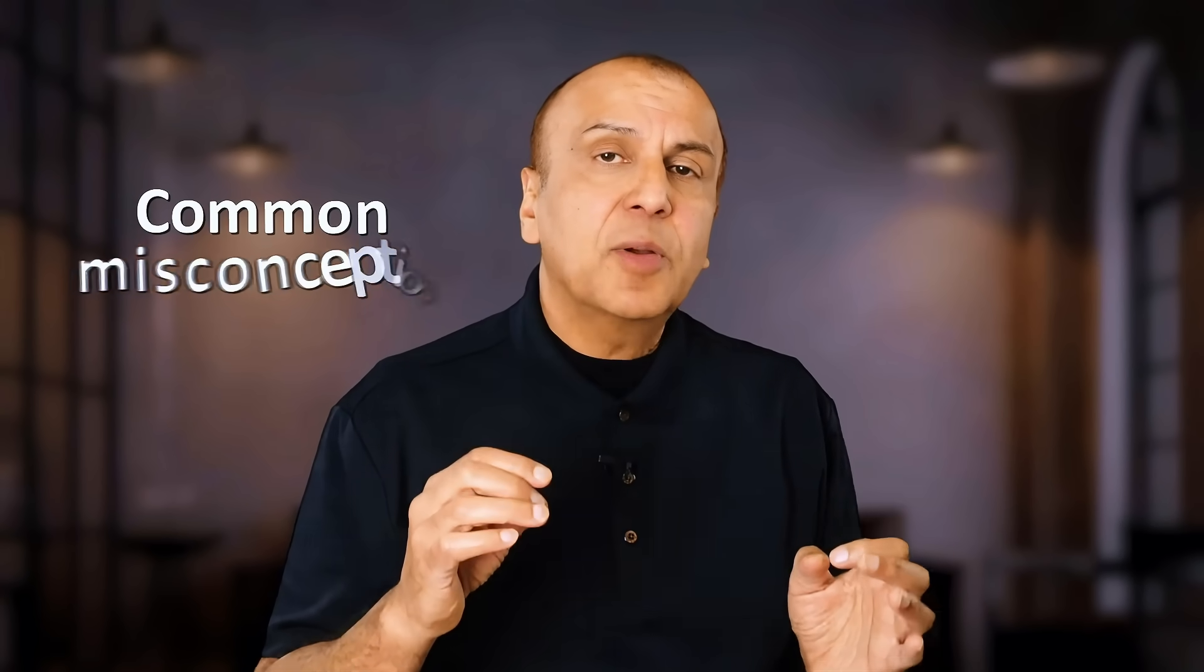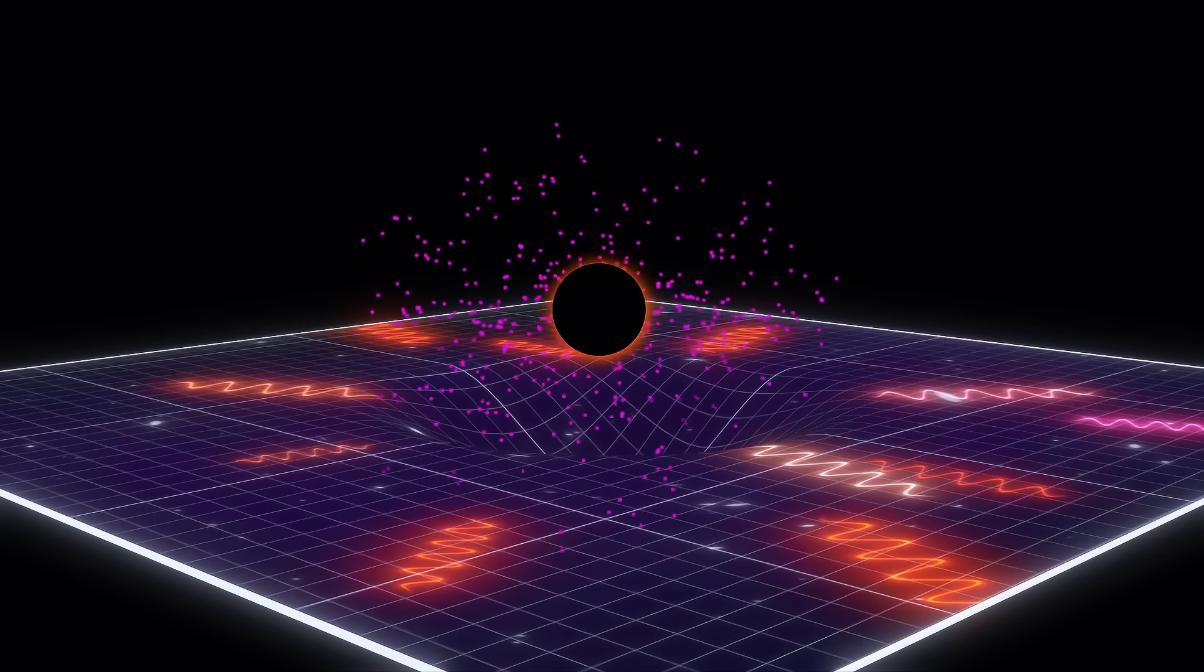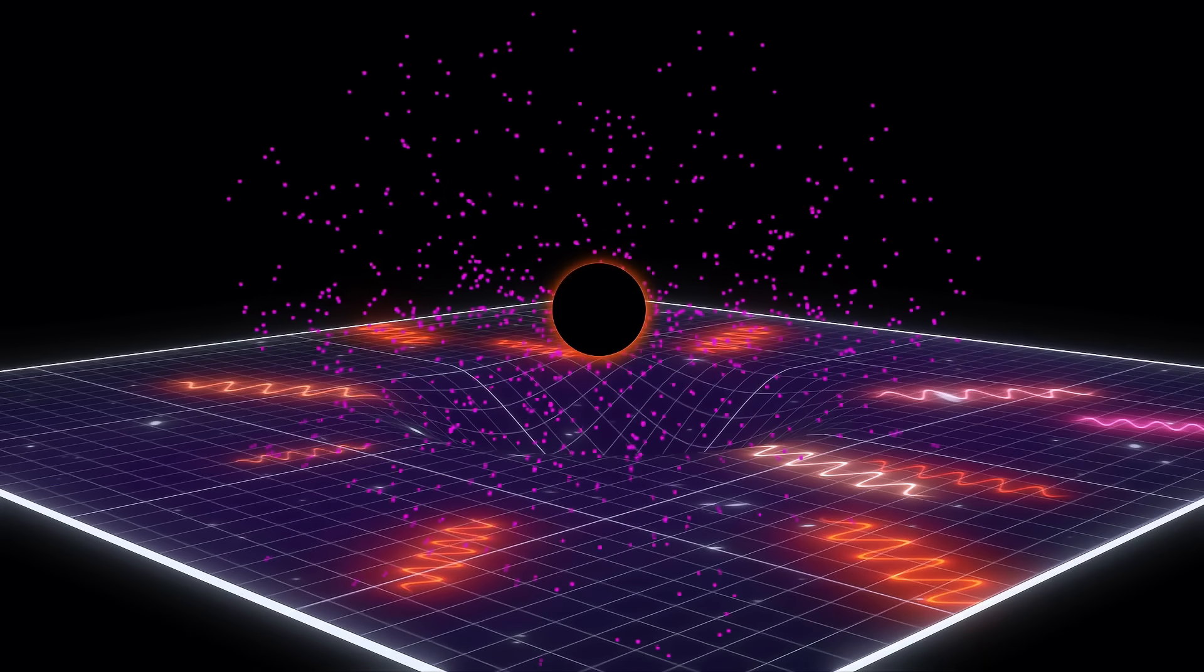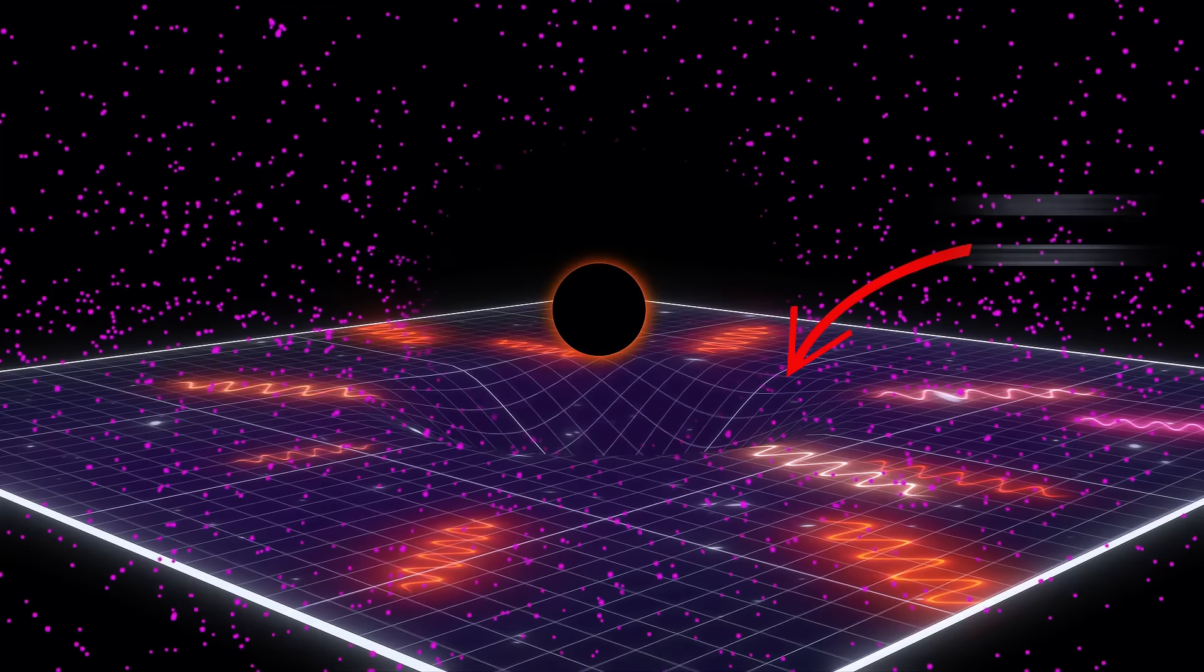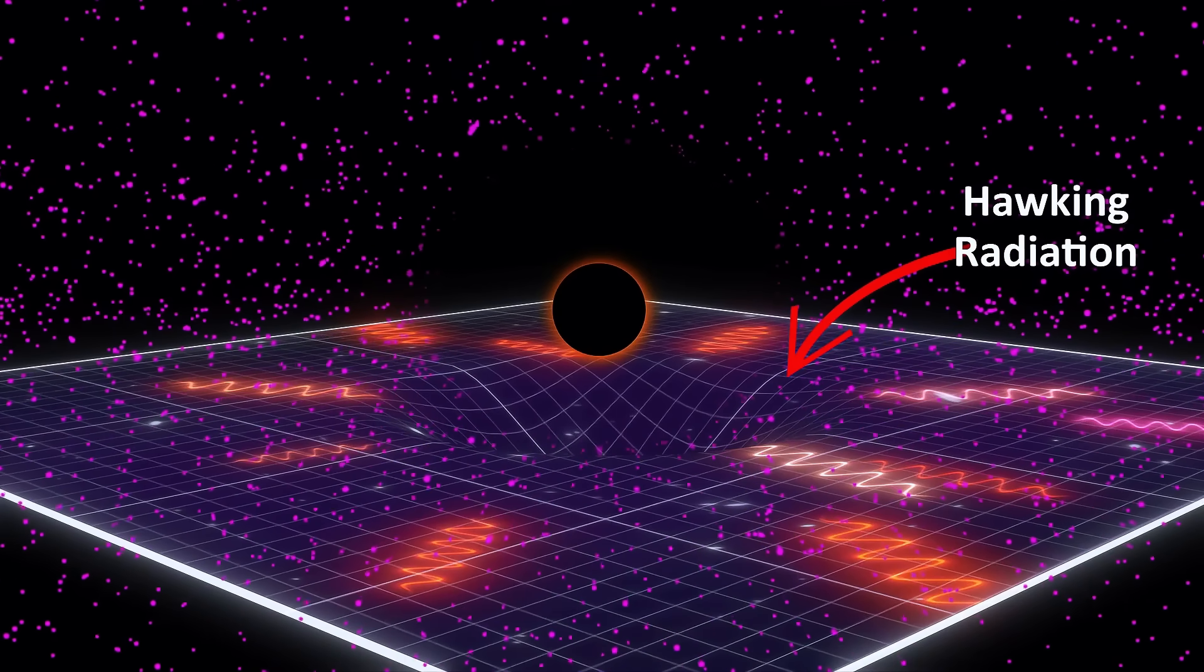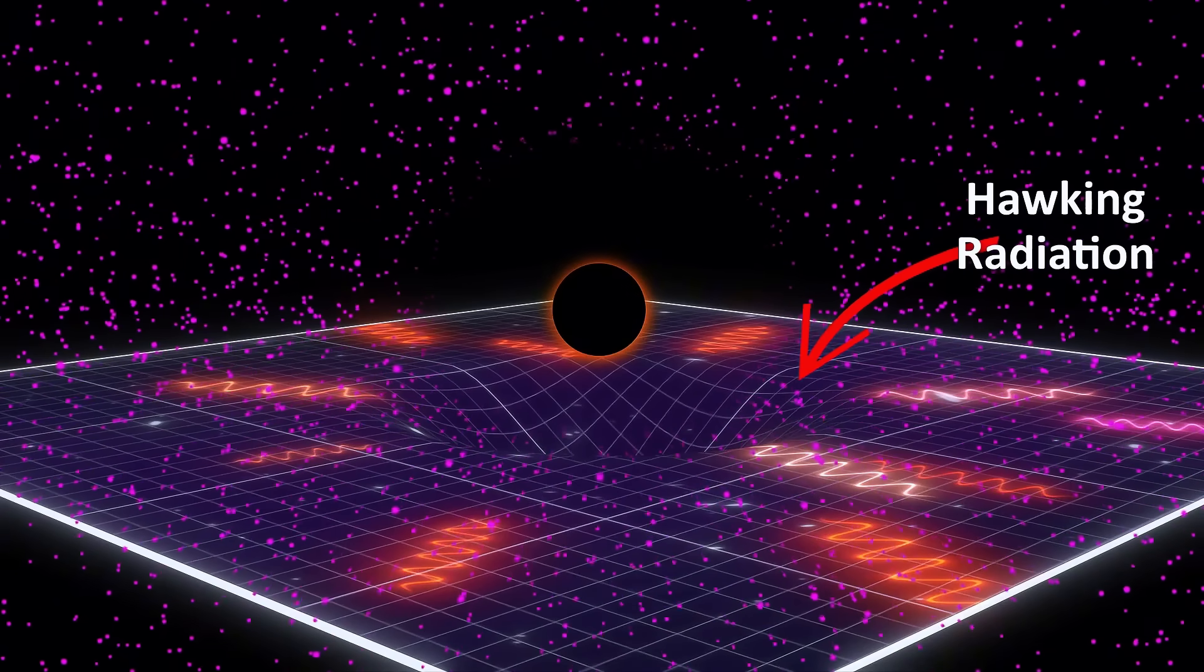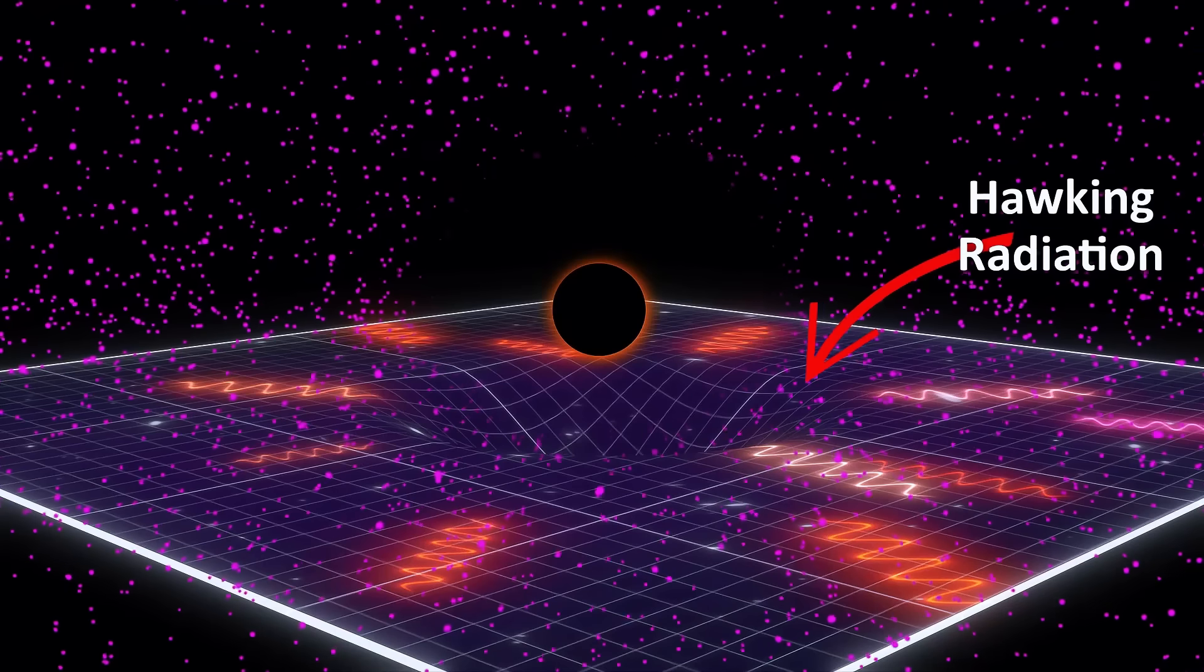I'm going to point out the simplified picture that Hawking presented in his book has led to some common misconceptions. For example, his description made people believe that the radiation is created at the event horizon. In reality, it is mostly created pretty far away, around 10 to 20 times the radius of the black hole. This makes sense when we stop thinking about Hawking radiation happening due to the event horizon, but rather due to the extreme curvature near the black hole itself.